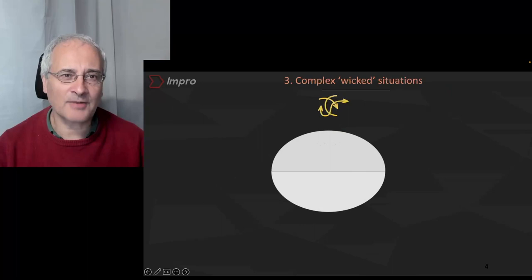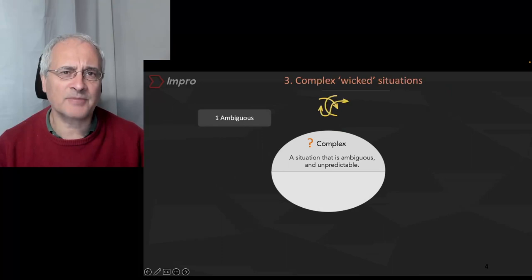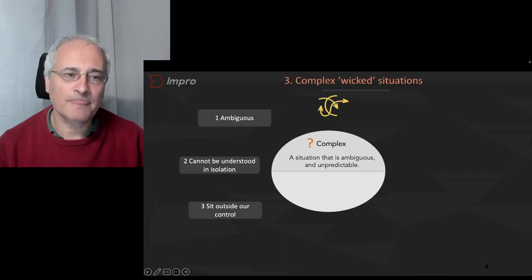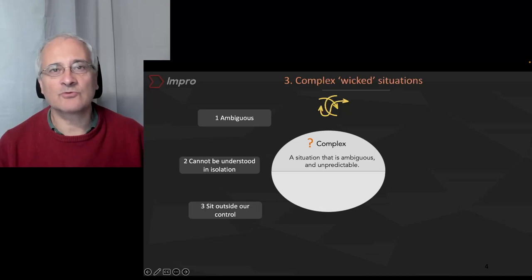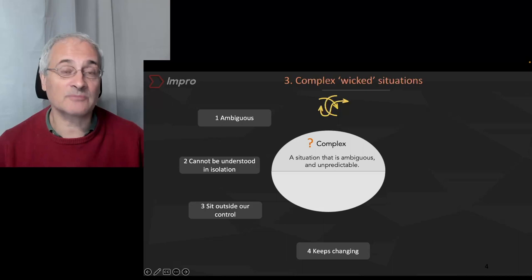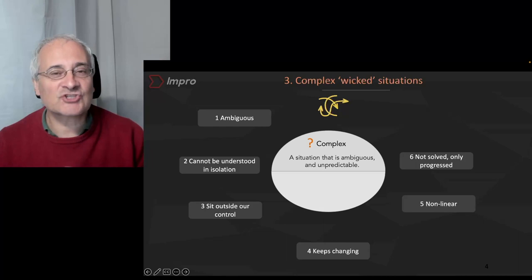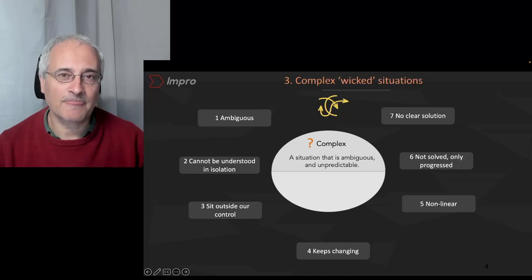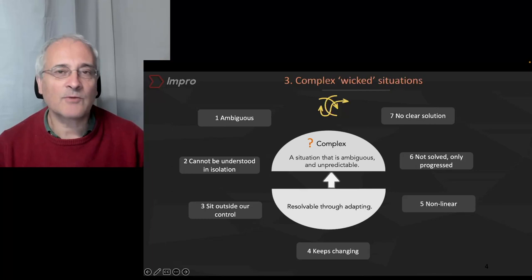Complex is very different. Complex are about situations that are ambiguous. We don't really understand them when we look at them. If we do look at them, we find that we have to go elsewhere to understand more about them. Sometimes they sit outside our sphere of control. When we do look at them, sometimes they keep changing. And very often with complexity, we can't actually solve complexity because it's so interlinked. Maybe we can only progress it. There may not be a clear solution to dealing with these situations.